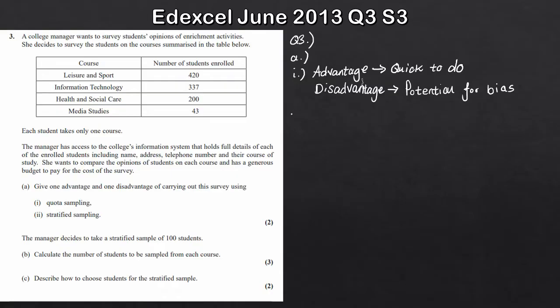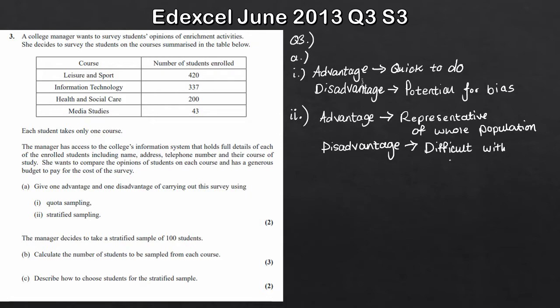That gives us the quota sample. Now for a stratified sample, again an advantage. Stratified samples are very good at being representative of the whole population. So representative of the whole population. What's one disadvantage to a stratified sample? And again, just to make clear, there are other advantages and disadvantages you can give. These aren't exhaustive. So disadvantage here - it can be difficult with large populations. Difficult or not easy with large populations. So our advantage and disadvantage for our two different sampling methods.